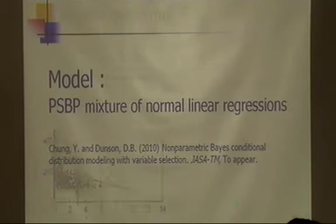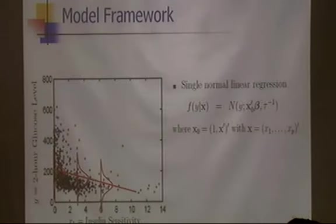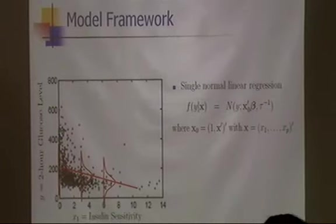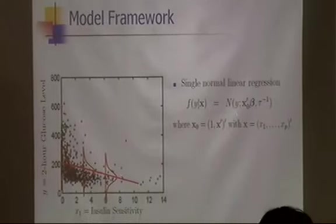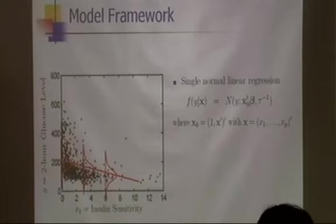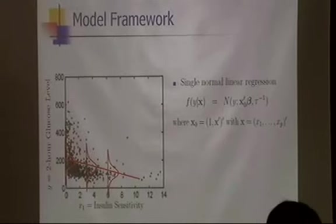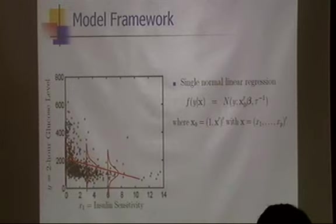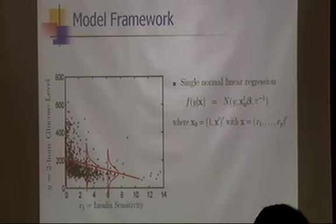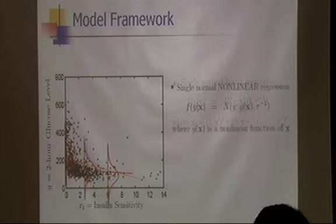What model will we use? The simple normal linear regression model is not sufficient because it assumes a linear mean in x. Note that x-naught denotes the intercept plus predictors. So the single normal linear regression is not good. Maybe we can characterize the mean as a nonlinear function of x. But the constant variance assumption and normality may not hold for this data either.